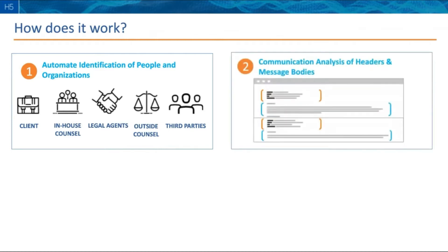The second piece is how do I disentangle the message bodies from the headers — not just the top header and the rest of the email, but really each header within an email message. Emails are natural aggregators; they aggregate a lot of messages. Being able to understand where each header starts and stops, where the message bodies start and stop, and being able to understand the direction of communication in each of those headers is really important, especially when it comes to PrivLog reasons.